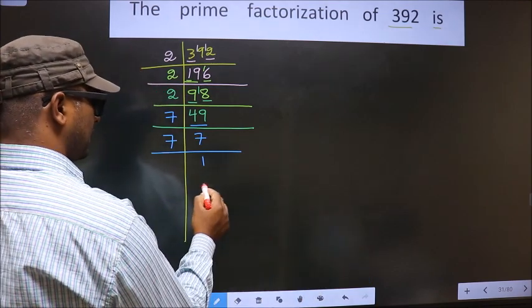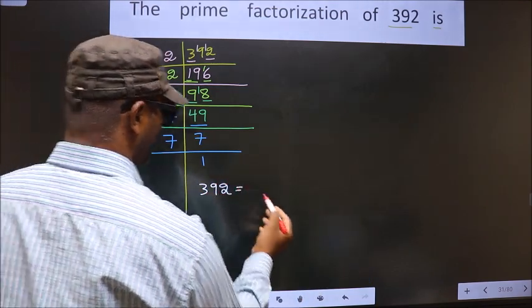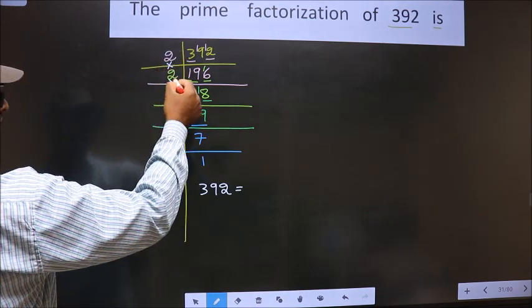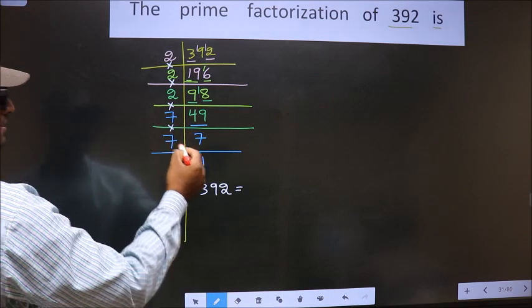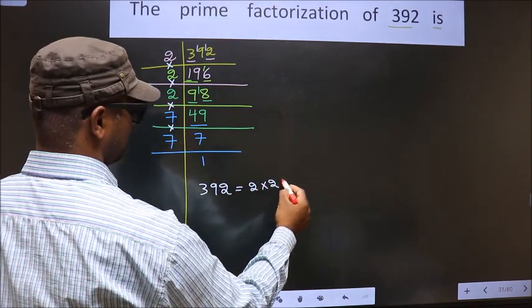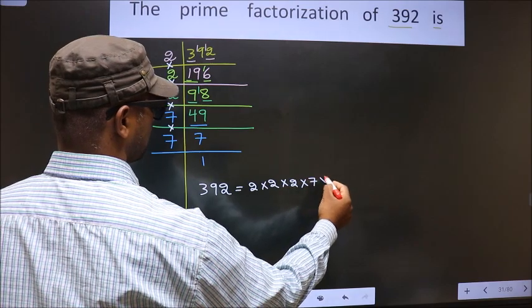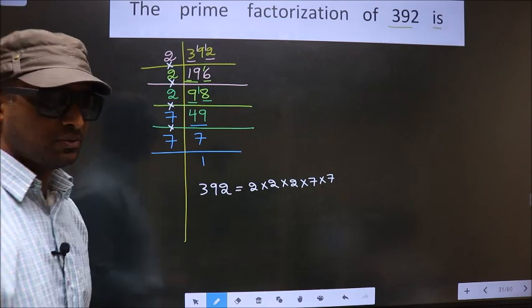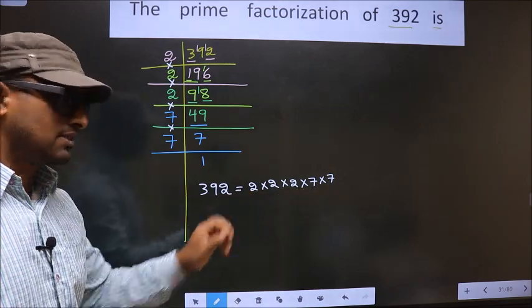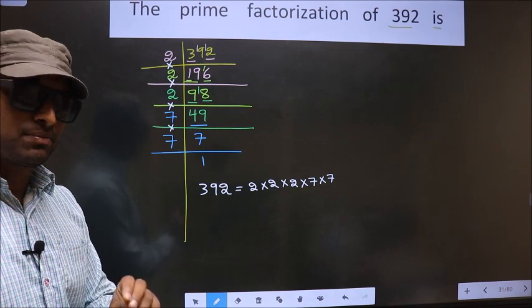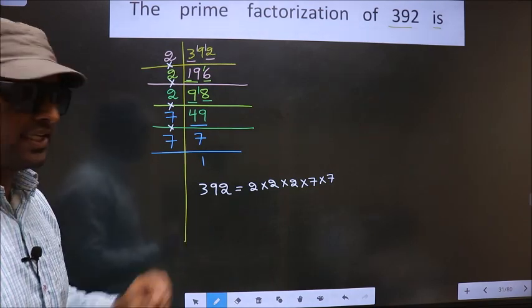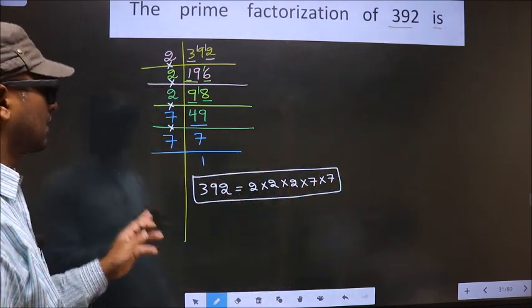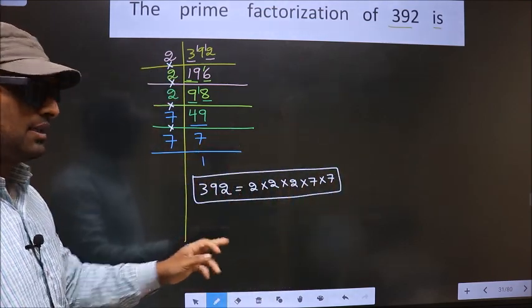So the prime factorization of 392 is the product of these numbers, that is 2 into 2 into 2 into 7 into 7. So this is the prime factorization of 392. This is also called the product of prime numbers of 392. So this is our answer. Am I clear?